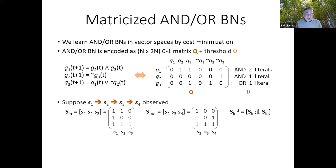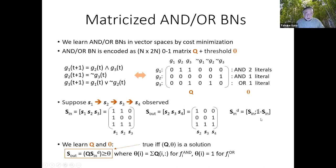Suppose we observe a sequence of transitions S1, S2, S3, and S4 like this. So we construct two binary matrices S_in and S_out like this. Also, we introduce the dualized S_in defined like this. Now, we can prove that if an AND/OR Boolean network represented by the pair of Q and theta gives actually the observed sequence of state transition, then Q and theta satisfy this matrix equation, and vice versa.